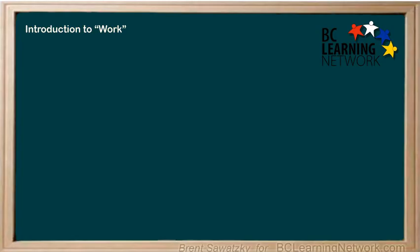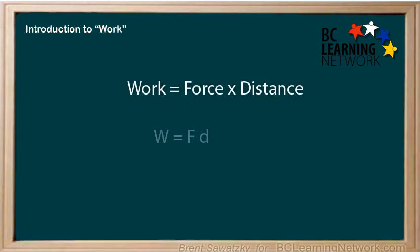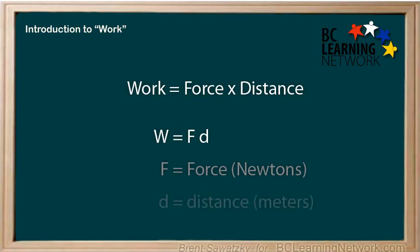In this tutorial we considered the scientific definition of work. Work equals force times distance, where force is the applied force and distance is the distance over which you moved the object with that force. Note that you always have to check that the distance is in the same direction as the force you applied before you put it into the equation.